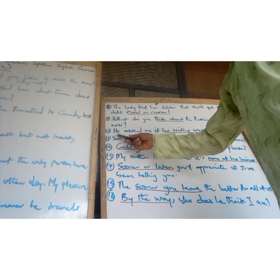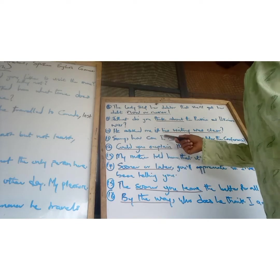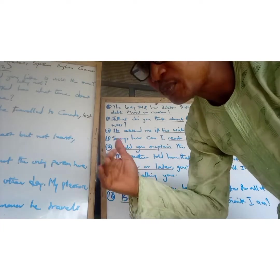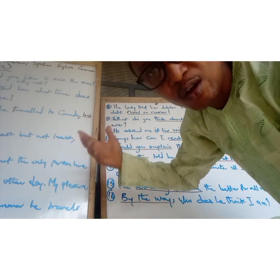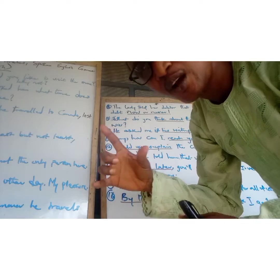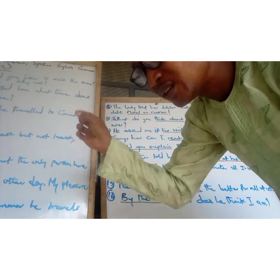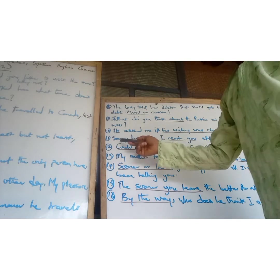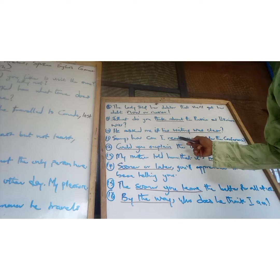The next one is 'is it clear?' For example, the lecturer asked his students if what he was writing on the whiteboard was actually clear, so that he could maybe change the size of the fonts if needed.